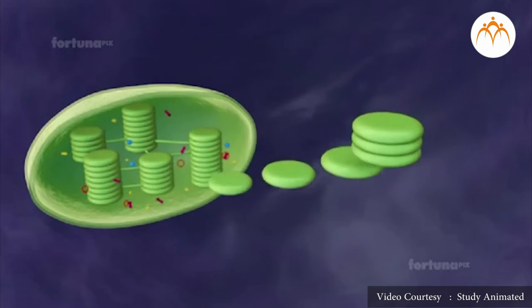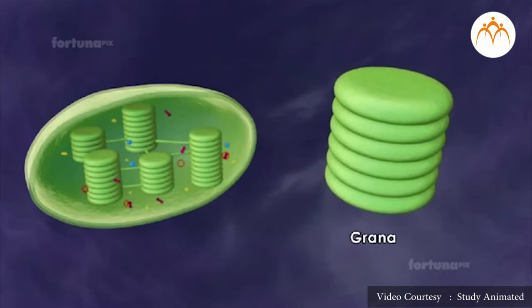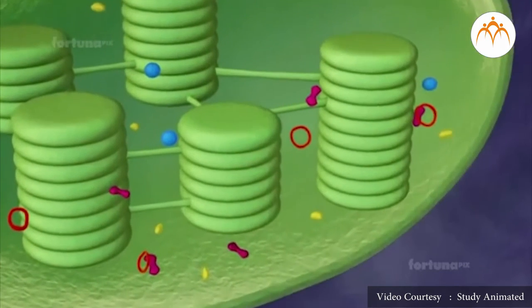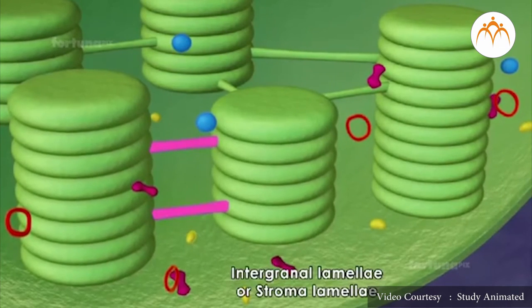Thylakoids are arranged in a stacked manner like a pile of coins. Each pile is called a granum. The thylakoids of different grana are connected by flat membranous tubules known as stromal lamellae.